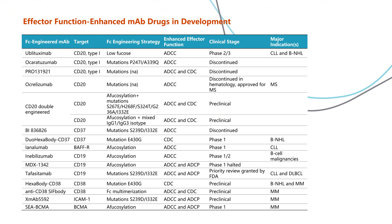Although various strategies can enhance ADCC, ADCP, or CDC effector function, they do not uniformly increase these effector functions when applied to different antigens. Modulating the FC tail to enhance ADCC and ADCP can negatively influence CDC and vice versa. It is recommended to evaluate FC effector function enhancing strategies for each target individually. In the development of FC-engineered monoclonal antibody drugs with enhanced effector functions, multiple strategies should be comprehensively taken into account. Although many effector function-enhanced monoclonal antibody drugs are currently in preclinical or clinical development, only a few will be finally approved for marketing. Obinutuzumab is a humanized anti-CD20 monoclonal antibody used as a first-line treatment for chronic lymphocytic leukemia, approved on November 16, 2017, and has become the only approved FC-engineered monoclonal antibody drug with enhanced effector functions so far.